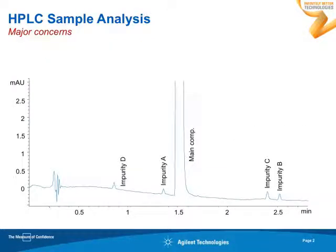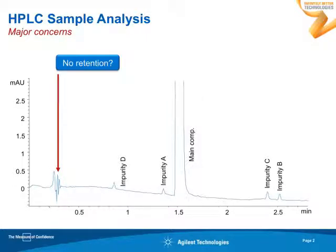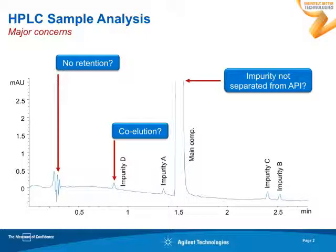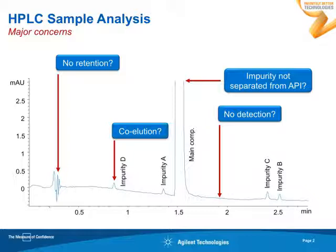To illustrate this, have a look at this chromatogram. It looks quite nice — it's an impurity analysis, as everybody is familiar with from the pharmaceutical industry. All compounds are nicely separated. However, can you be sure you have not missed a compound in the injection peak — a compound without retention? Are you 100% sure you don't have a coelution with a second peak here? If you have the main compound, are you sure nothing is underneath it? Maybe you have chosen the wrong detector, or is everything really eluting from your column? These are typical problems you encounter every day in the analytical lab when developing methods.